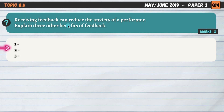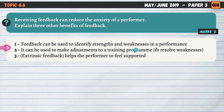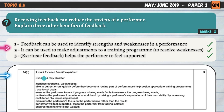Topic 8.6, feedback: explain three other benefits of feedback. First, feedback can be used to identify strengths and weaknesses in a performance. Second, it can be used to make adjustments to a training programme — identifying weaknesses informs what needs to be worked on. Third, extrinsic feedback helps the performer feel supported; receiving feedback from a coach or teammates means you don't feel isolated. Pause the video here and get familiar with these, as this is a common question.